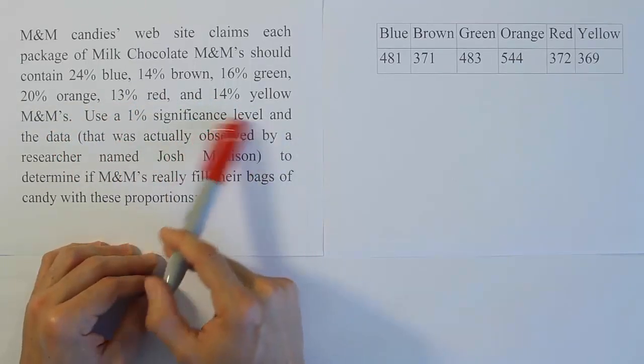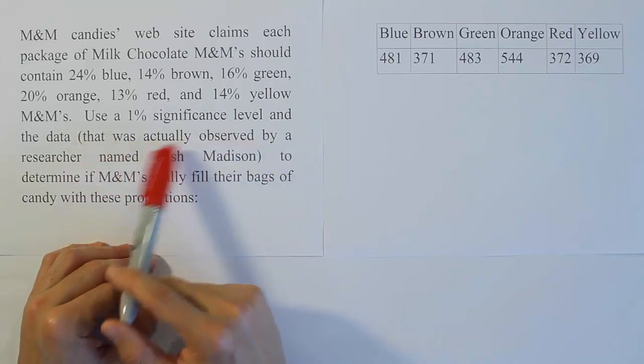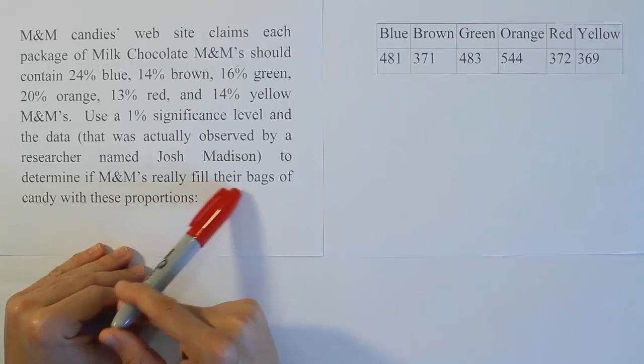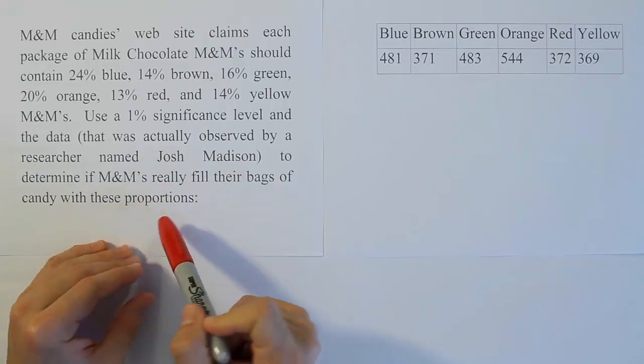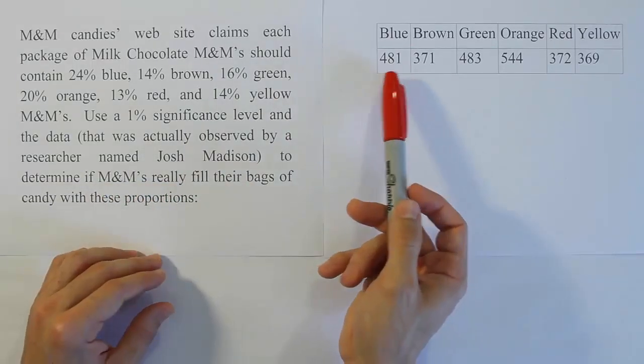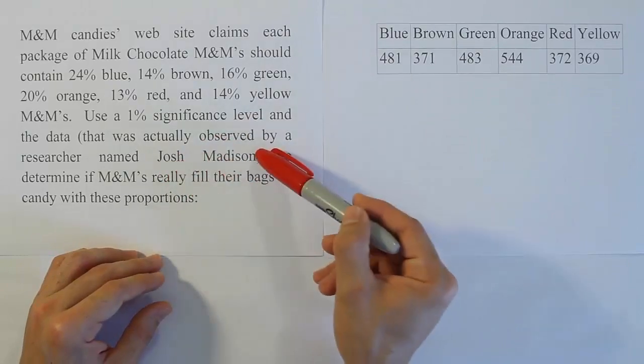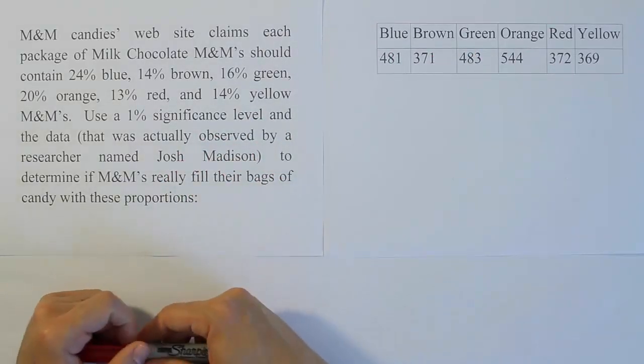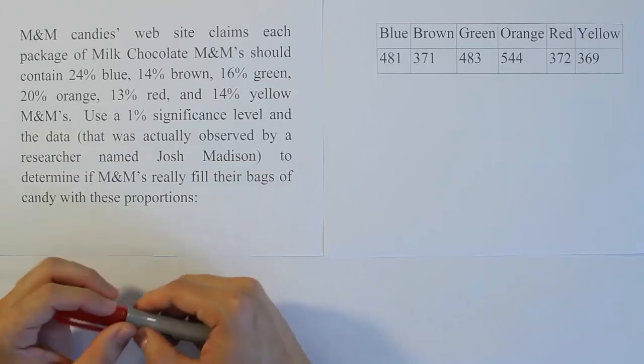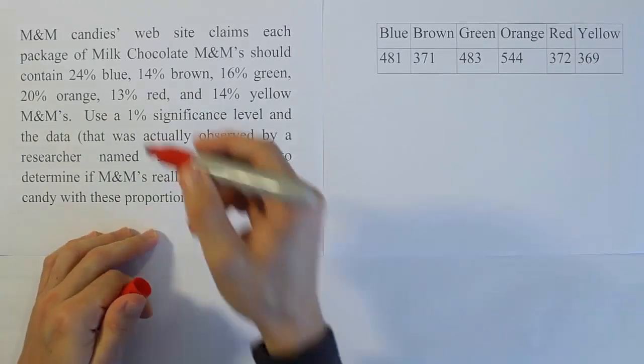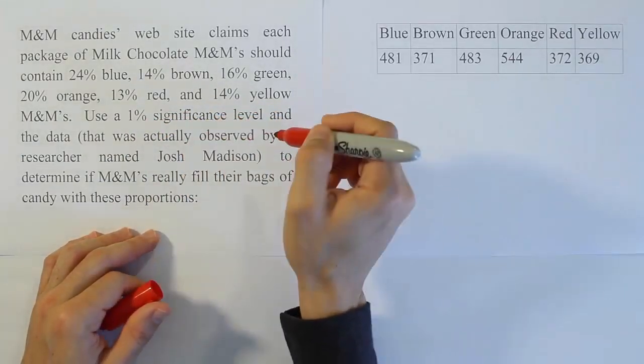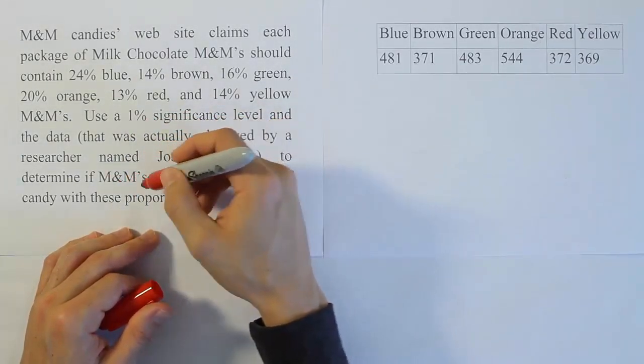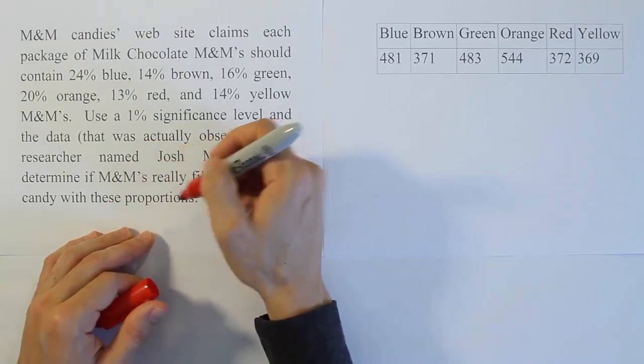Use a 1% significance level and the data that was actually observed by a researcher named Josh Madison to determine if M&M's really fill their bags of candy with these proportions.